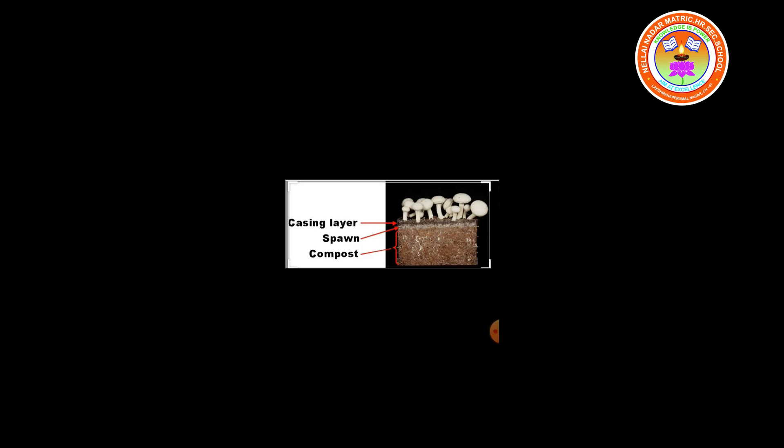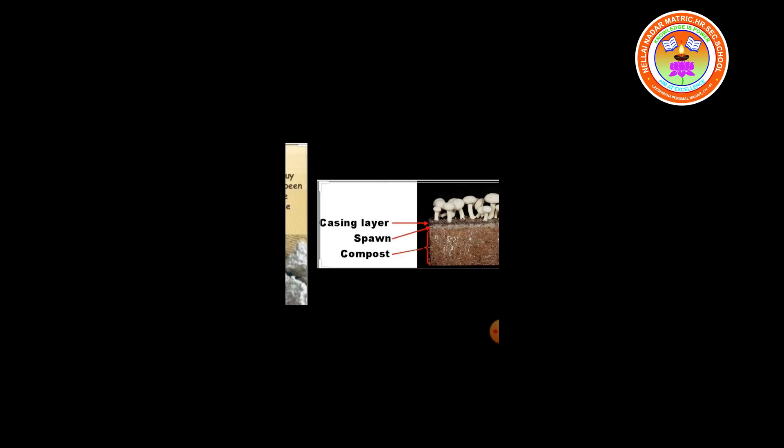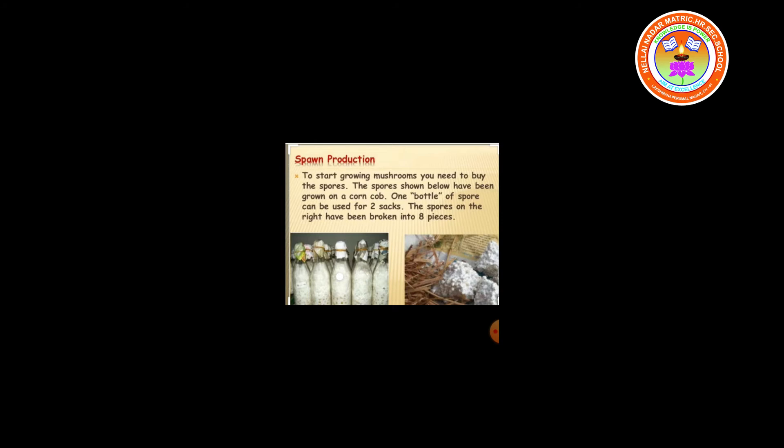The second stage of mushroom cultivation is spawning. Spawn is the mushroom seed. Mushroom spawn is the mycelium growing on a given substrate; it serves as a seed or planting material in mushroom cultivation. Spawning is the inoculation of the culture into the substrate or compost. It is the actual planting of spawn and requires much care depending on the species of mushroom. Spawn is prepared by growing fungal mycelium in grains under sterile conditions. Spawn is sown on compost.